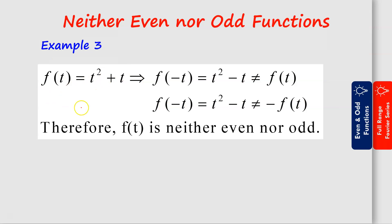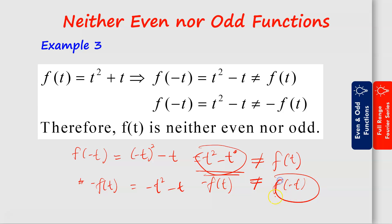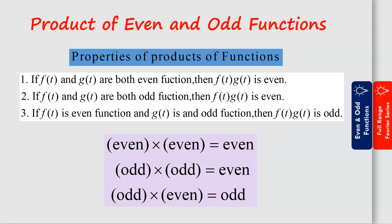For example, let's say we have this function. Our f(-t) equals t squared minus t. In this case it is not equal to f(t), so it is not an even function. And then if we compute negative f(t), f(-t) is also not equal to negative f(t), because negative f(t) equals negative t squared minus t, which is not the same as f(-t). Therefore this function is neither even nor odd.